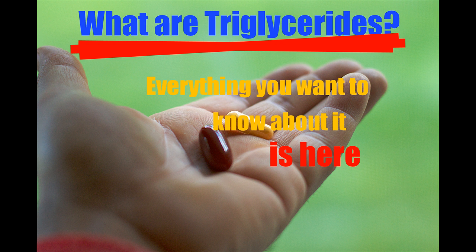Triglycerides are formed from a single molecule of glycerol combined with three molecules of fatty acid. The glycerol molecule has three hydroxyl groups, and each fatty acid has a carboxyl group. The hydroxyl groups of the glycerol join the carboxyl groups of the fatty acid to form ester bonds.